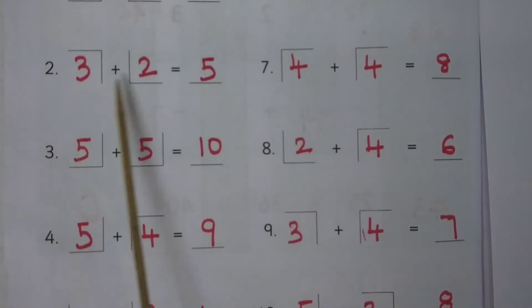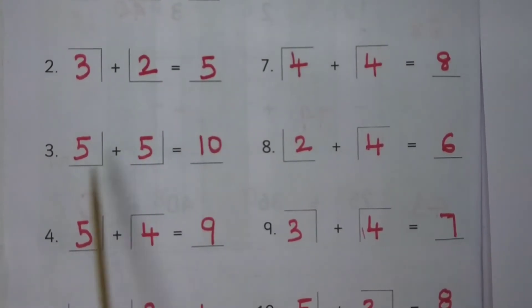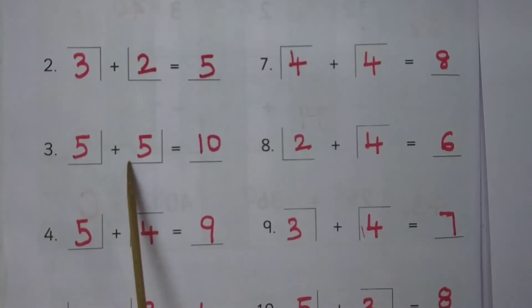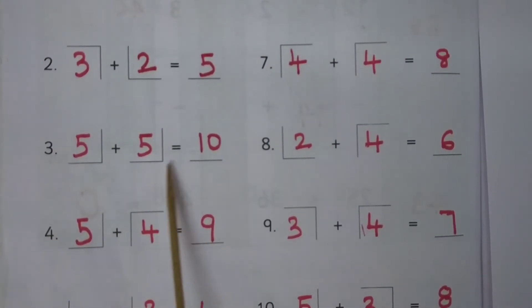3 plus 2 is equal to 5. 5 plus 5 is equal to 10.